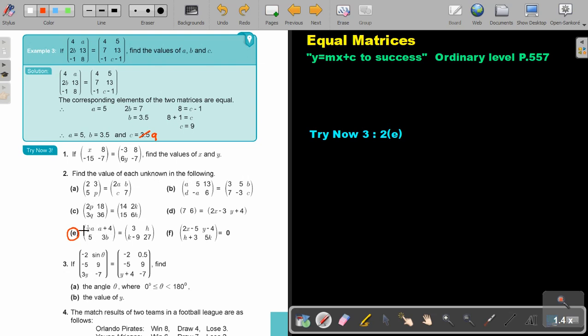Find the value of each of the unknowns in the following. Remember, if I write this, let's first write it down. It's 1.5A, then A plus 4, then 5 and 3B, and 3 and K minus 9, and H and 27.